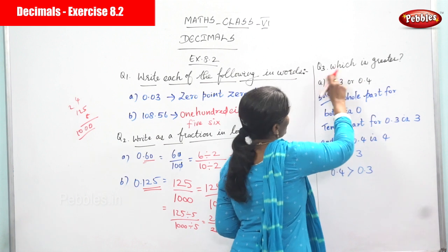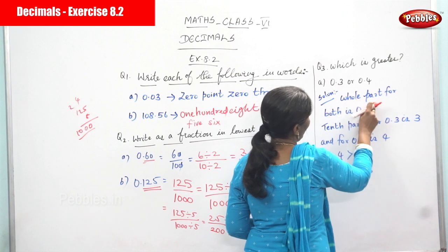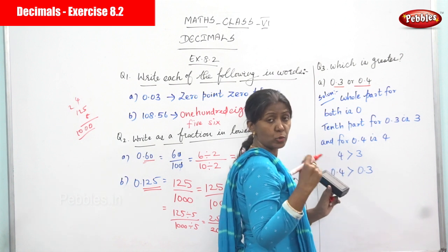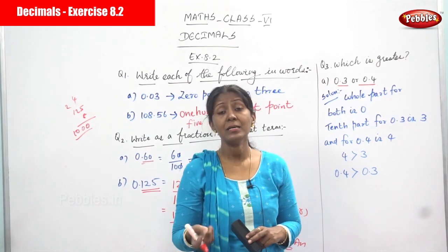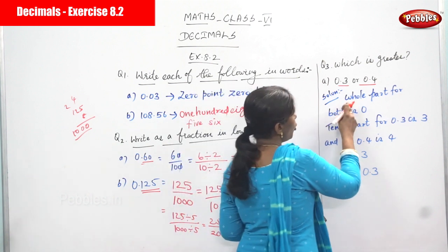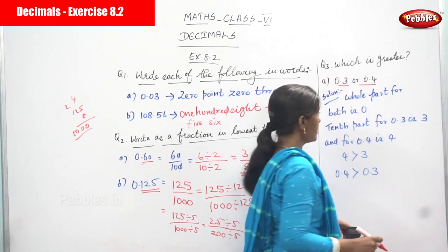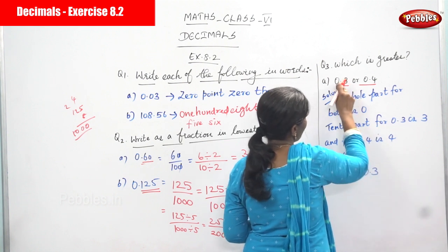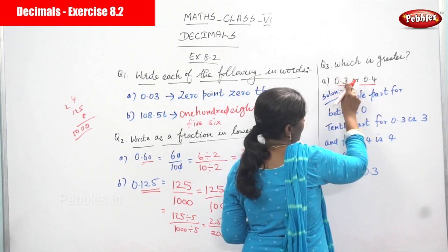Question number three: which is greater, 0.3 or 0.4? These two are decimal numbers. The first number is 0.3 and the second is 0.4. For the solution, the whole part for both is 0 — so whole part for both is equal.